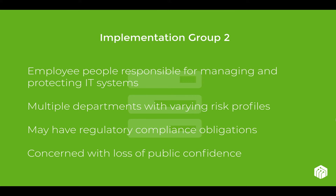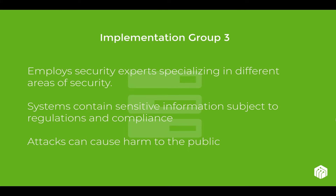Implementation group two is a company that employs people who are responsible for managing and protecting IT systems — they have a dedicated IT or IT security person. They usually have different departments such as accounting, maintenance, or engineering, and each department has a different risk profile. Organizations in implementation group two may have regulatory compliance obligations — things like HIPAA, PCI, and any compliance regulations that deal with security. Another indicator of being in this group is if you are concerned with a loss of public confidence that would arise should a breach happen at your organization.